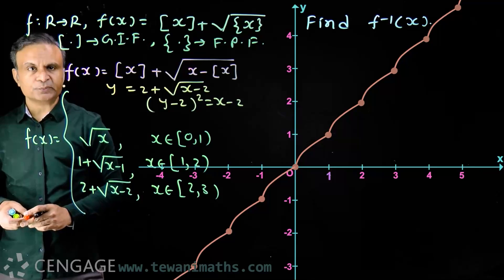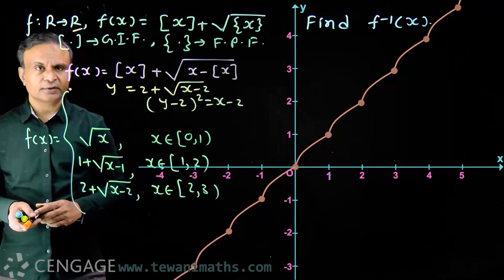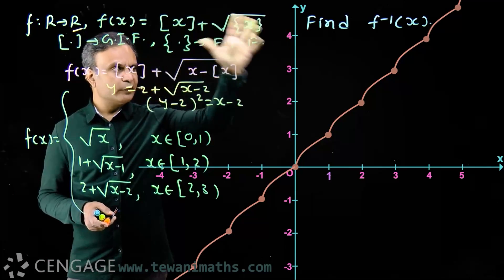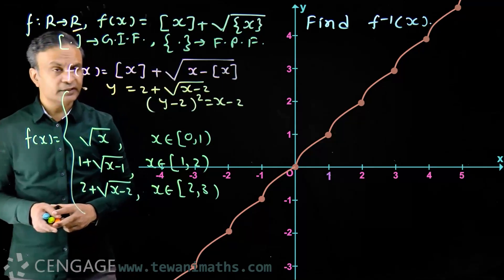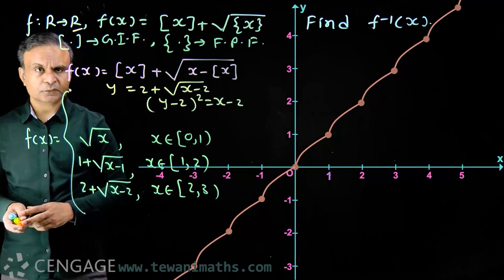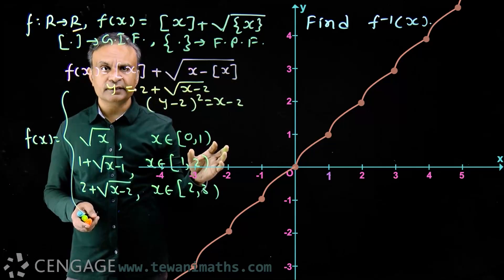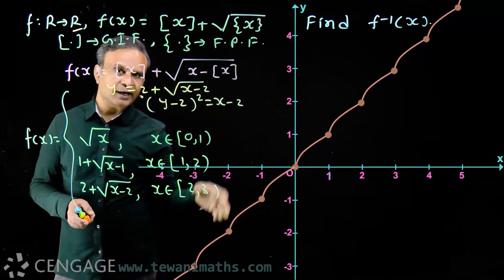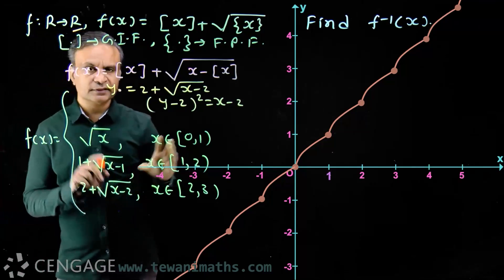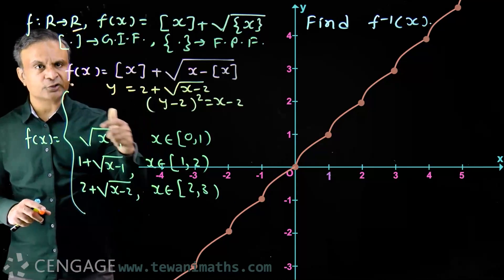This pattern holds for negative values of x as well. From the graph, we can clearly see that the function is strictly increasing — no value of y is repeated — so the function is one-one. The values range from −∞ to +∞, so the range of f is ℝ, meaning the function is onto. Therefore f(x) is invertible.